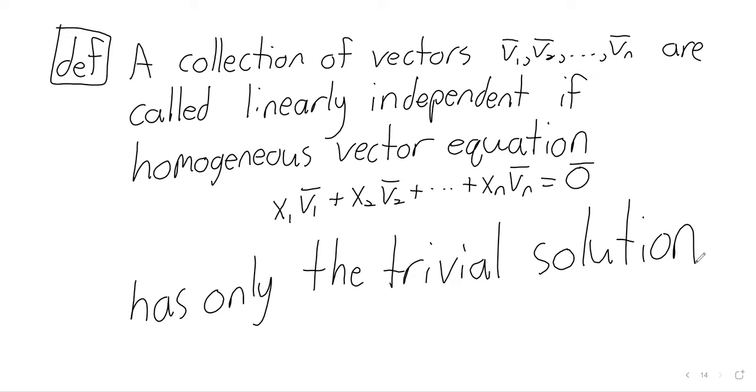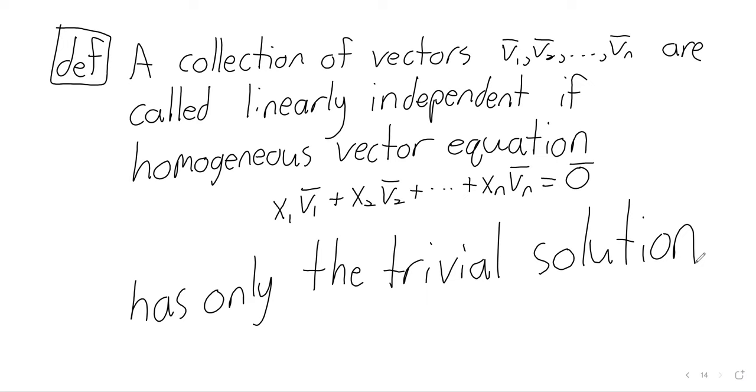So linear independence is kind of the vector equation equivalent of not having free variables. It says, if you've got this homogeneous equation, this solution that you know you always have is the only solution that you've got. And this is a fundamental definition of linear algebra. It's much more important than it probably seems when you first look at it.